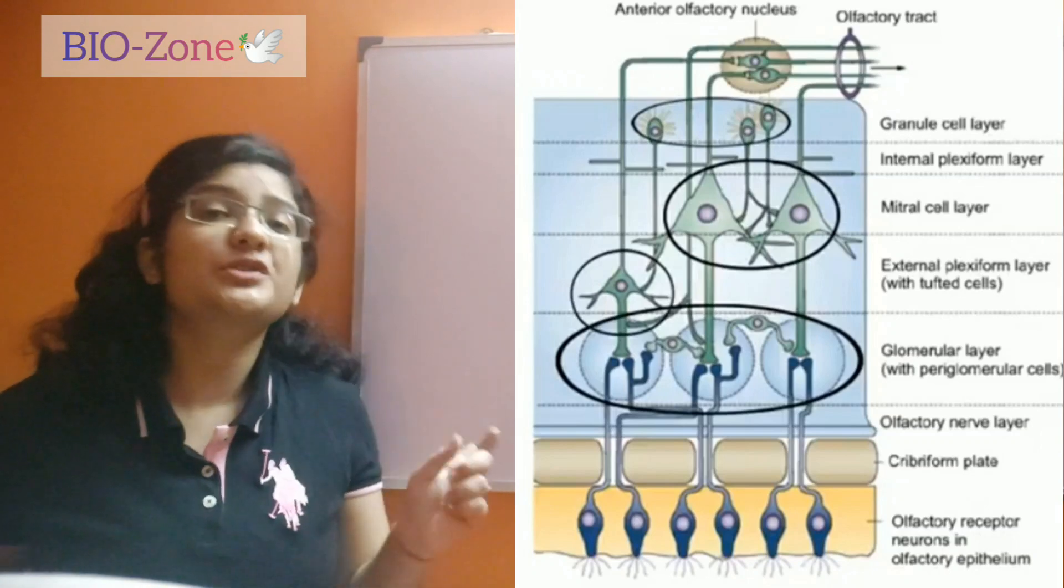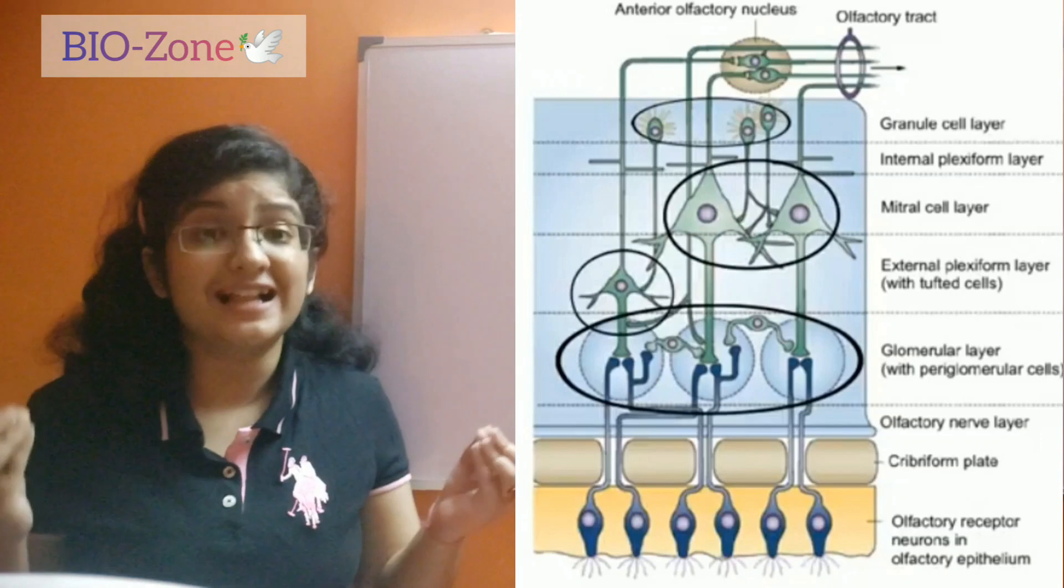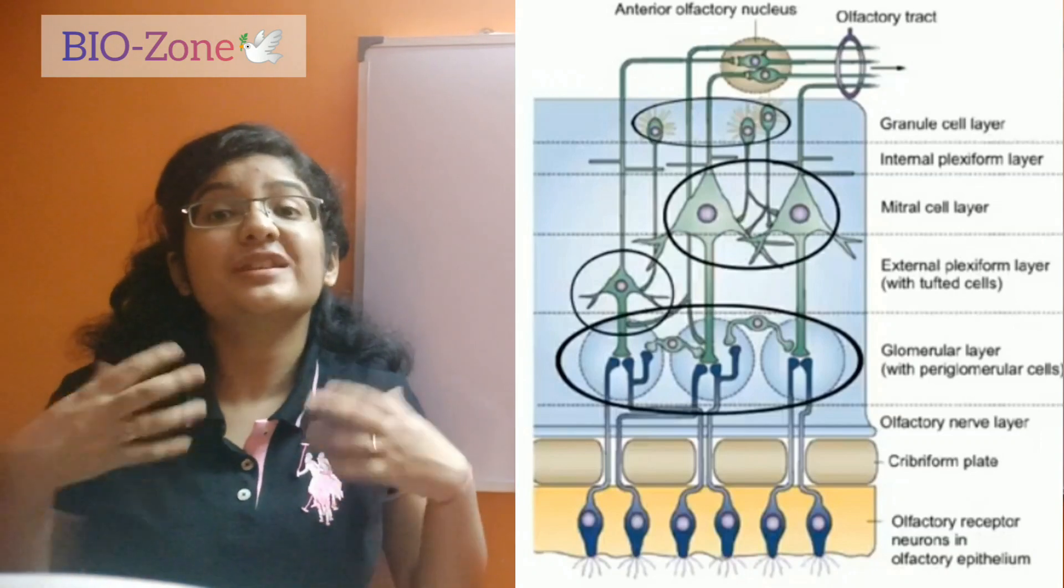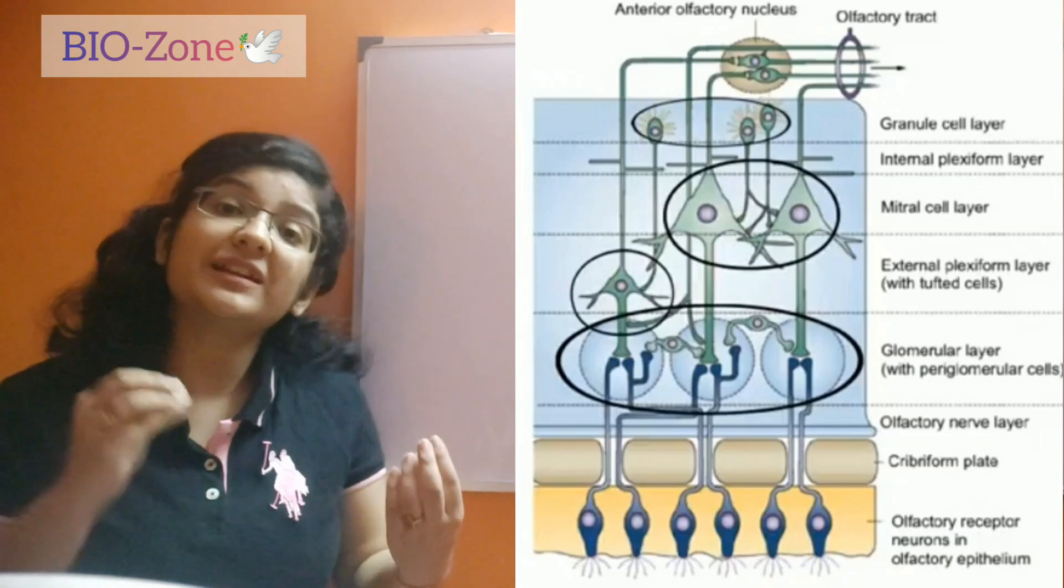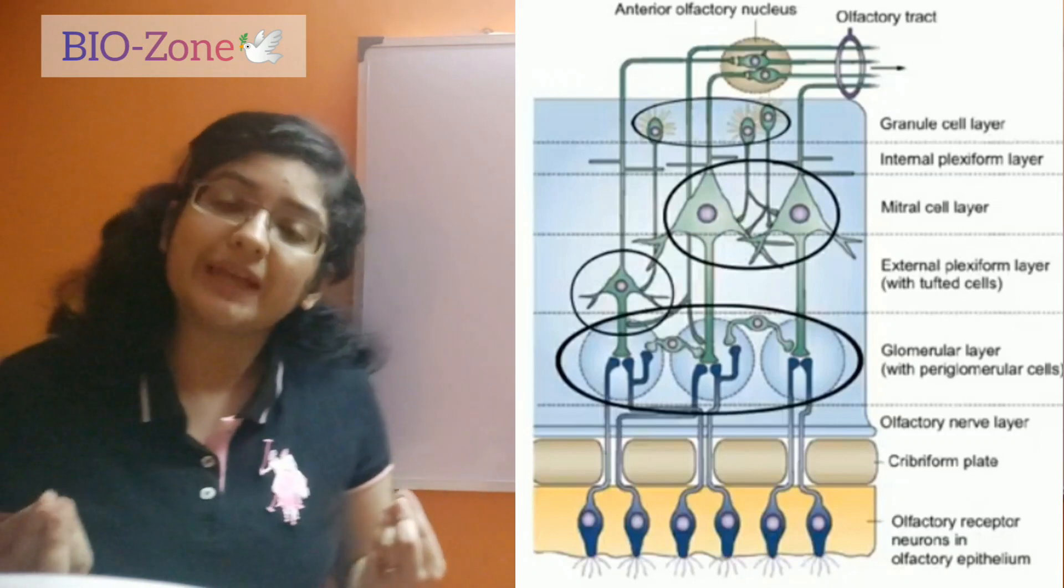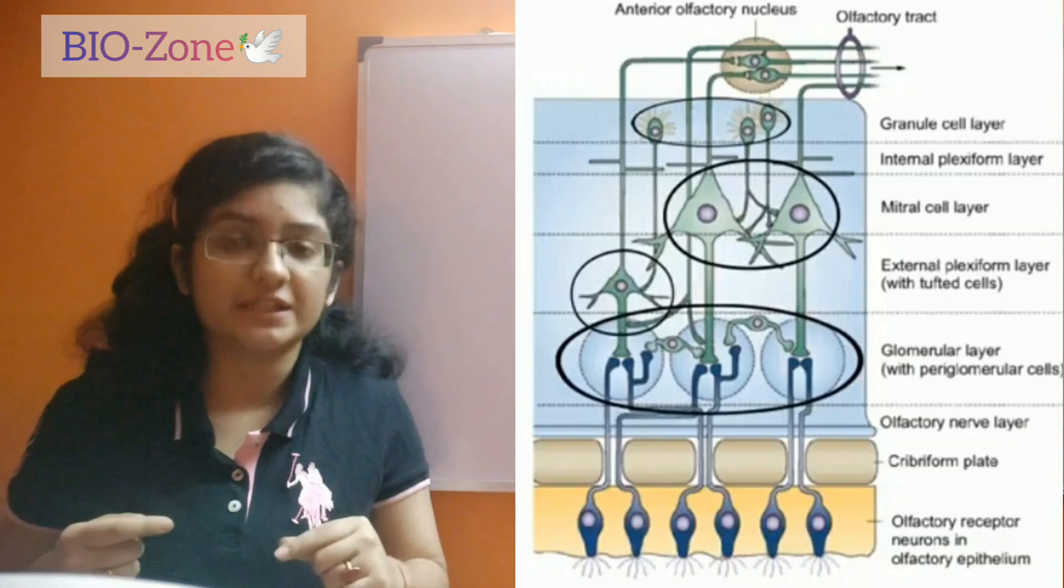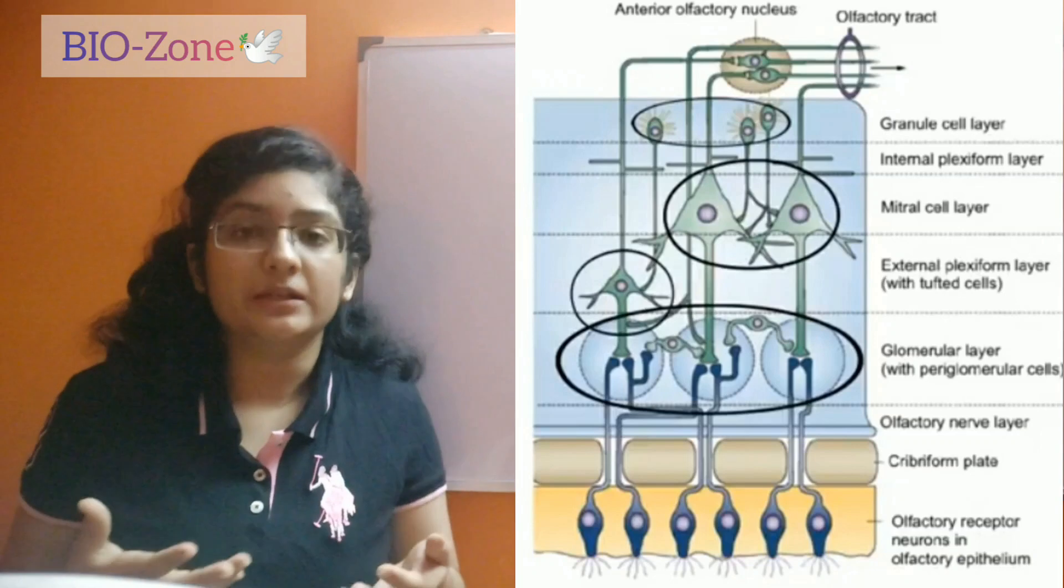Like that, our mitral and tufted cells collect information from the receptor cells, that is different receptor cells which respond differently to different stimulation or the same odorant molecule, and then decide which type of stimulation it is. That is called refinement.